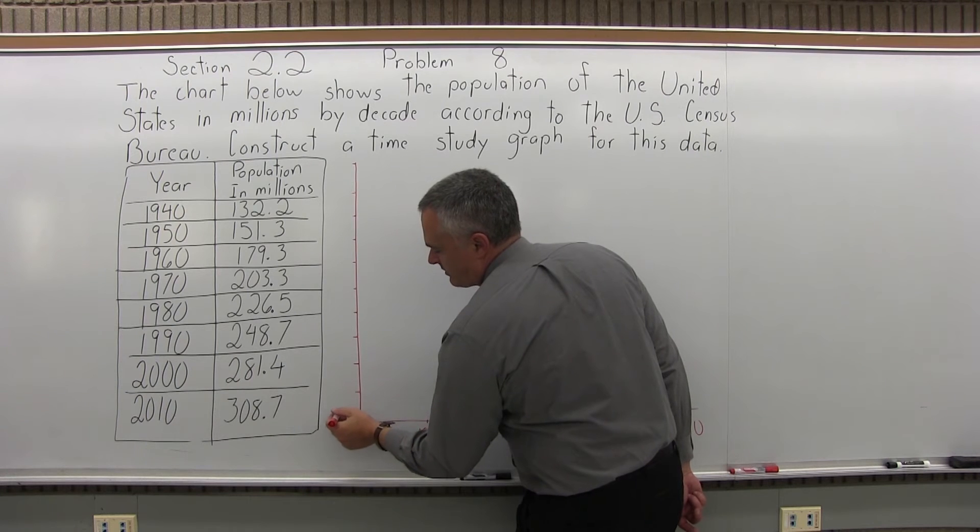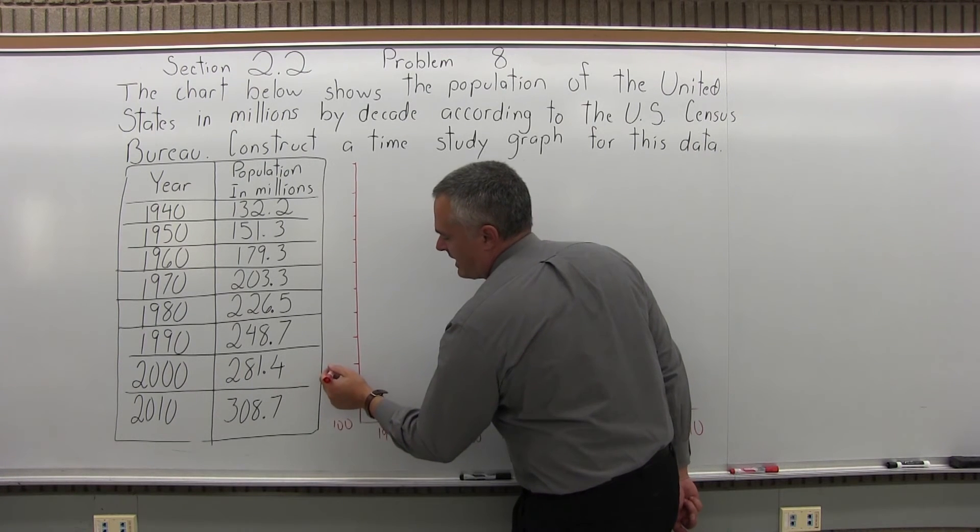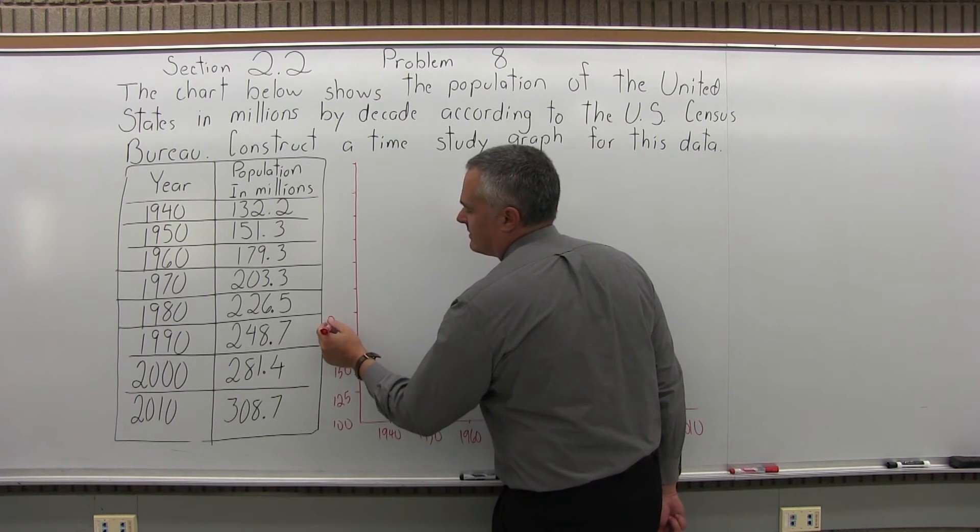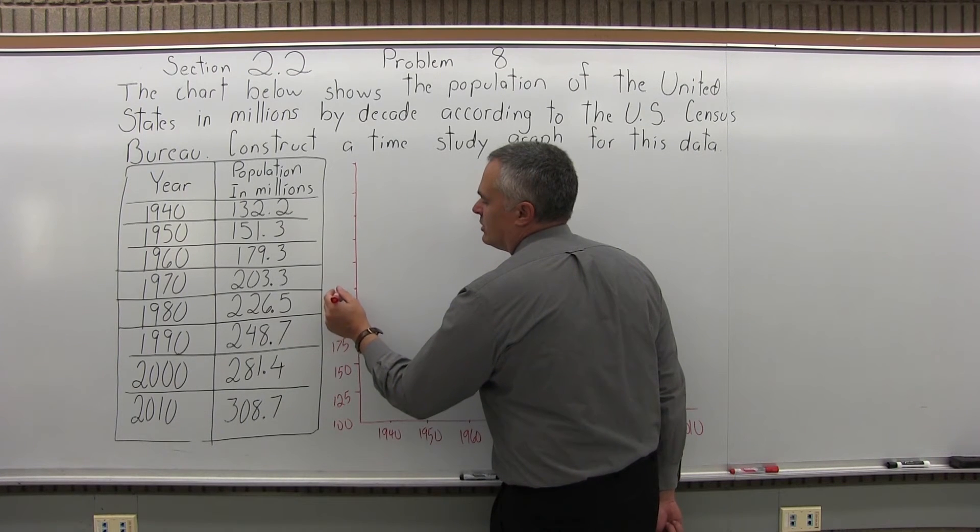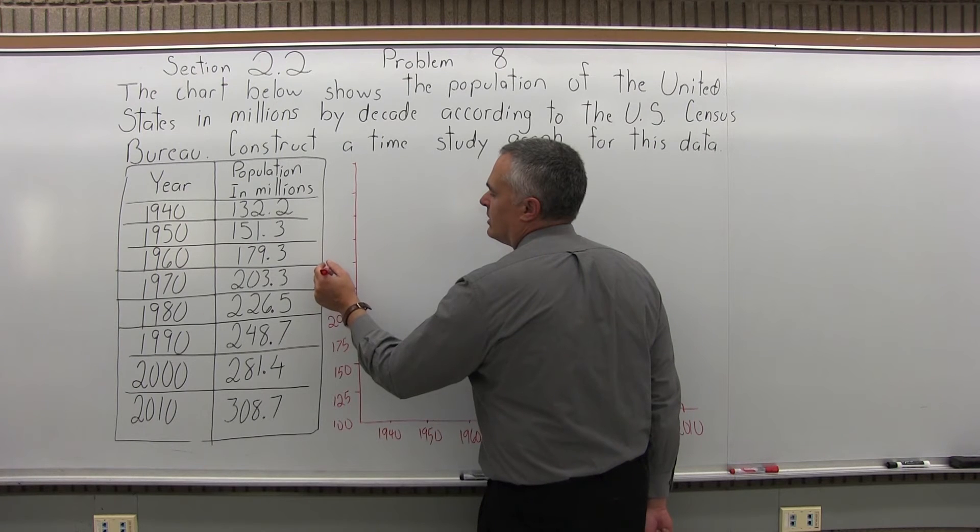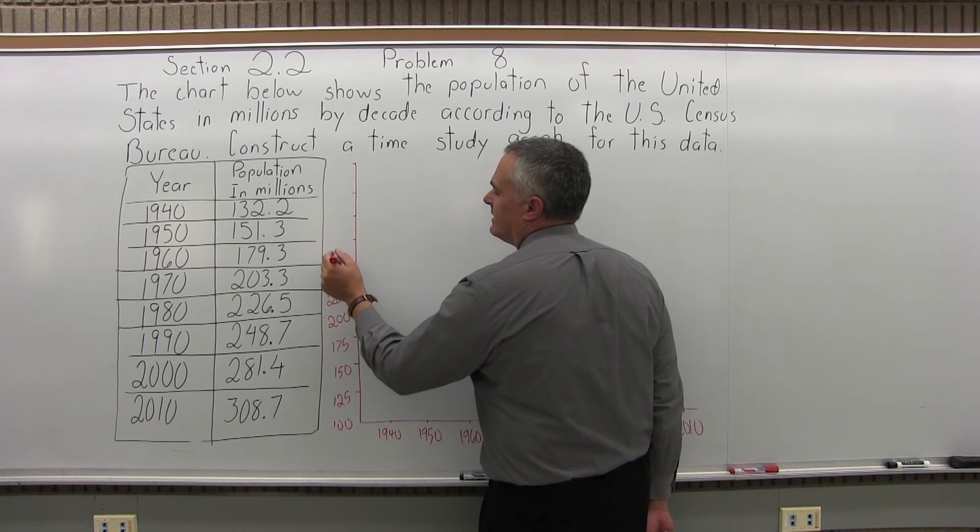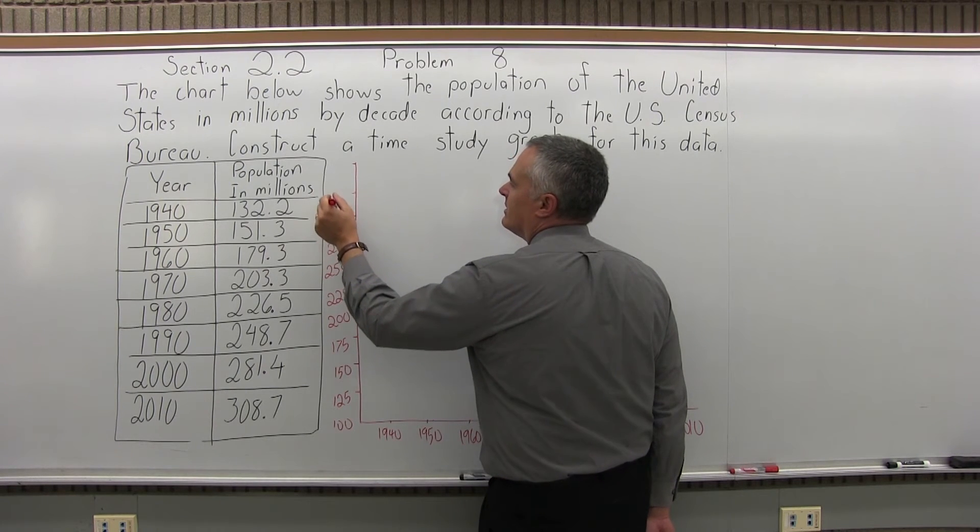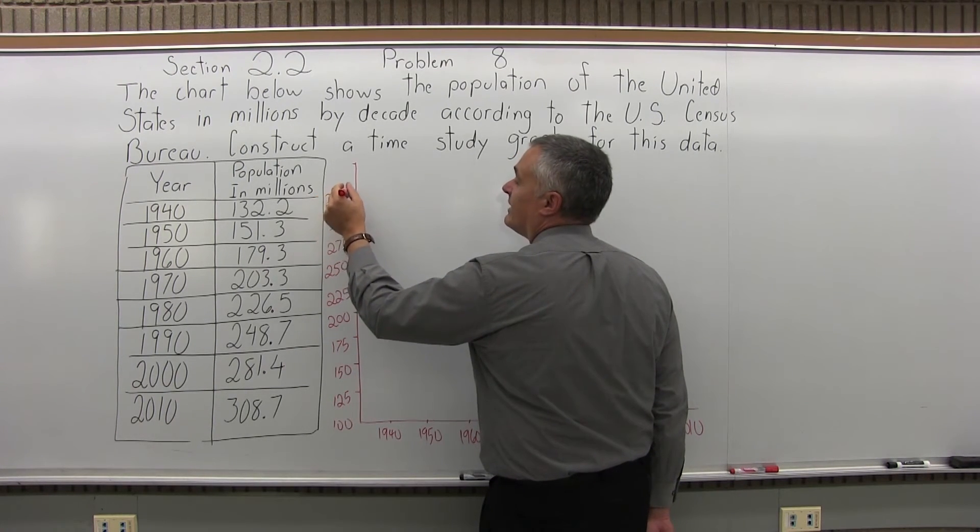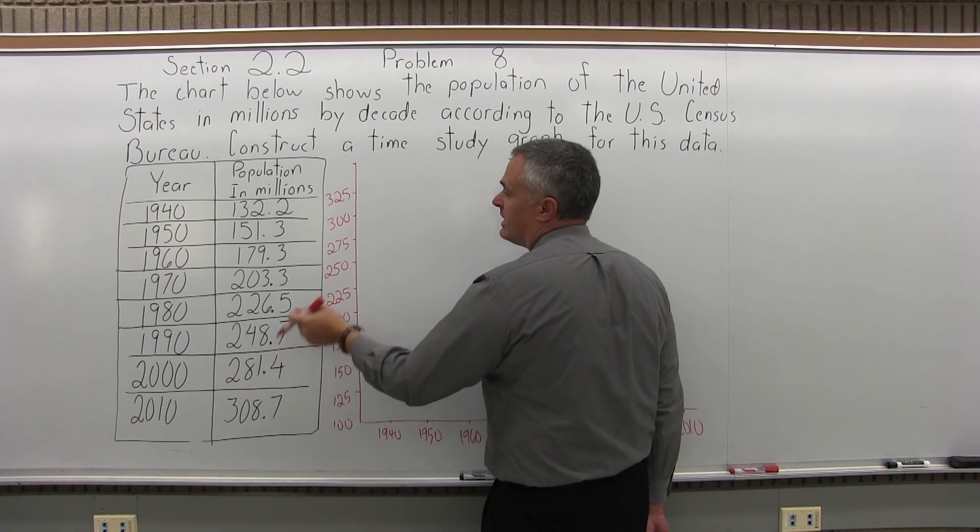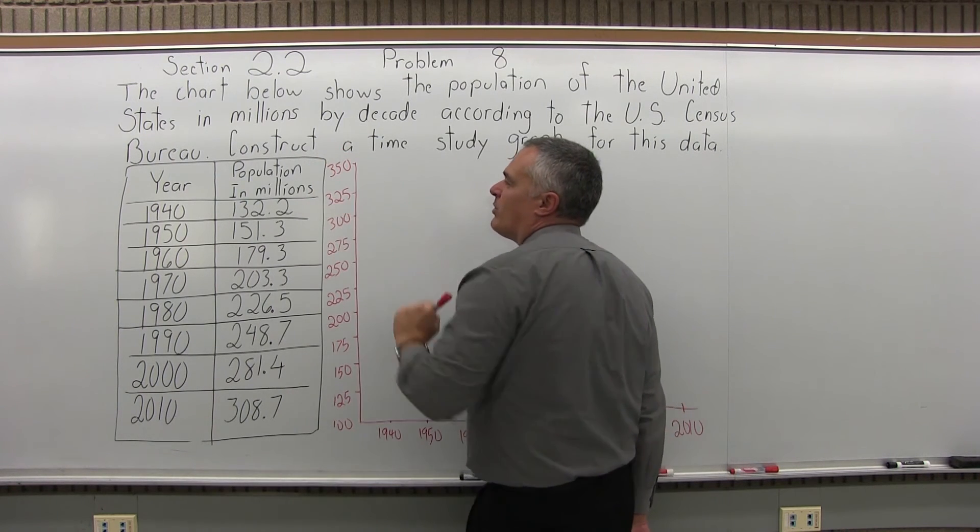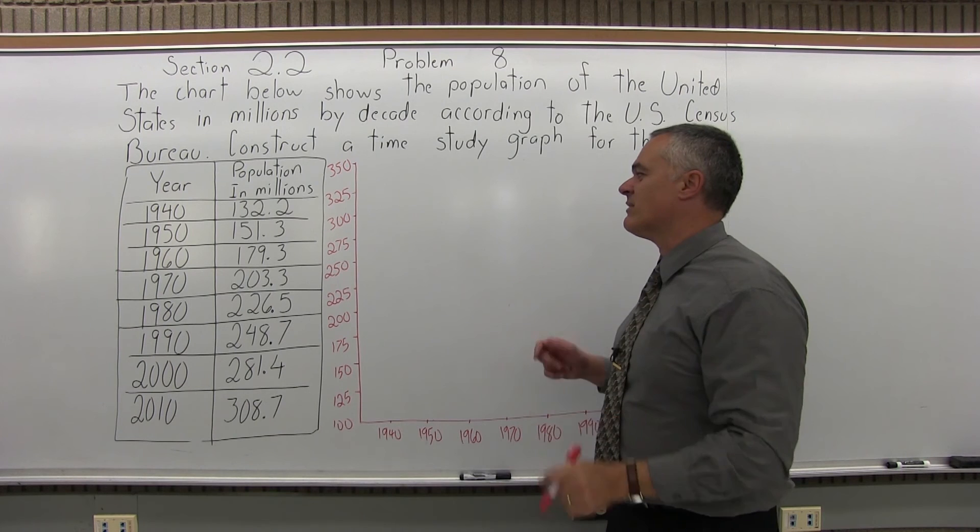So we'll start at 100, 125, 150, 175, 200, 225, 250, 275, 300, 325. Now that would be enough, that accommodates my 308 million. Just because I had room in 10 lines is like a natural amount of lines. I'll put one more, that's really not necessary, it just sort of makes the graph look a little bit nicer.